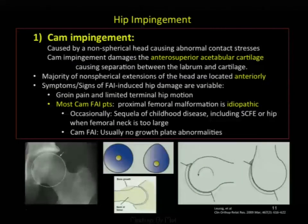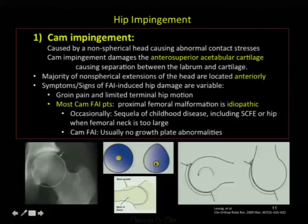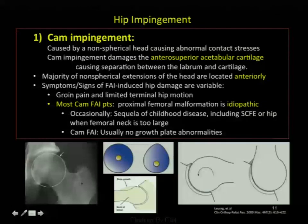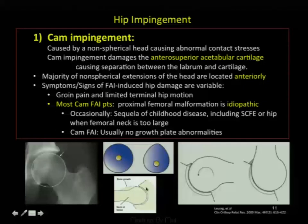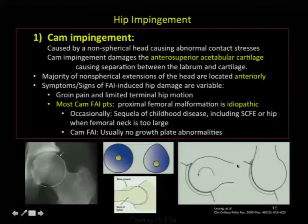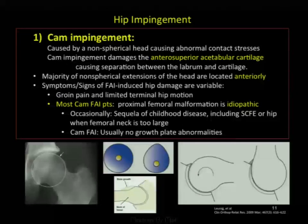A CAM, as in a cam lifter in a car, is an eccentric bulge coming off at the femoral head-neck junction. One of the other shapes is called a pistol grip deformity. The majority of these non-spherical extensions of the head are located anteriorly, and consequently most of the abnormalities are in the anterosuperior acetabular cartilage.